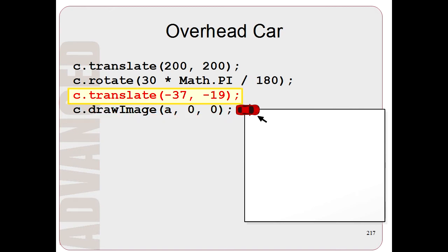Then we translate it. So basically we just push the car a little bit to the upper left. Then we rotate it. So we rotate it by 30 degrees. So that's pointed in the direction we want it to be.